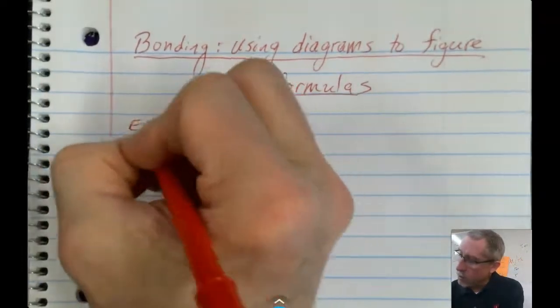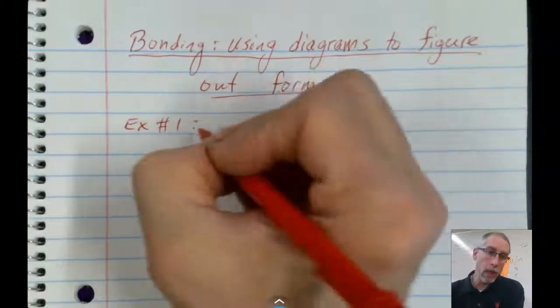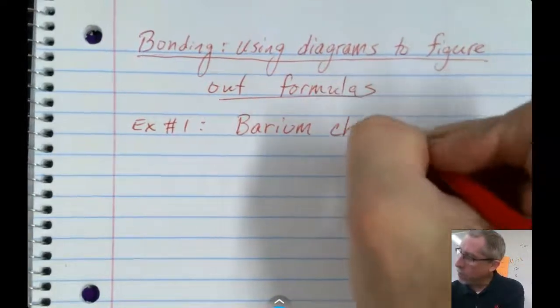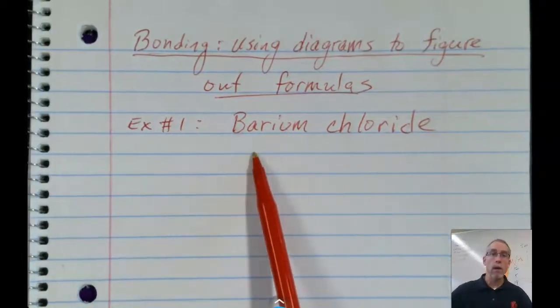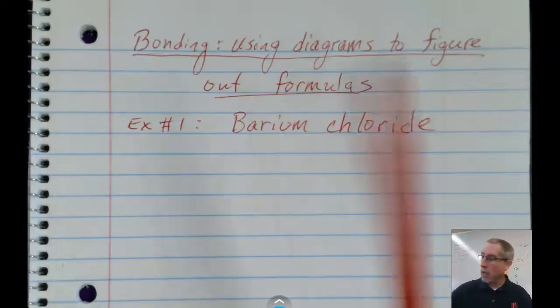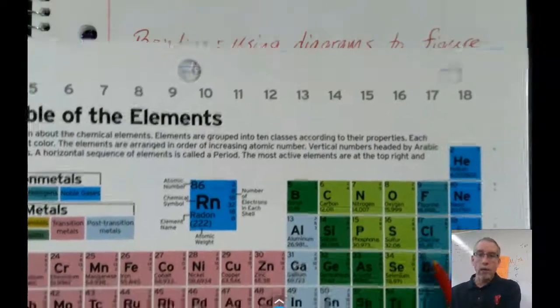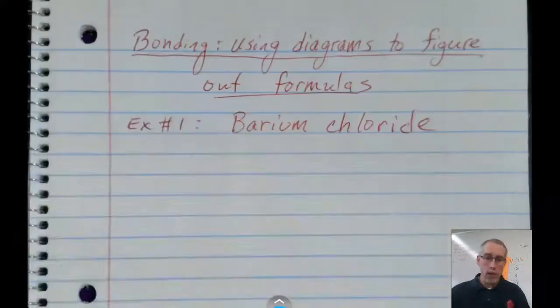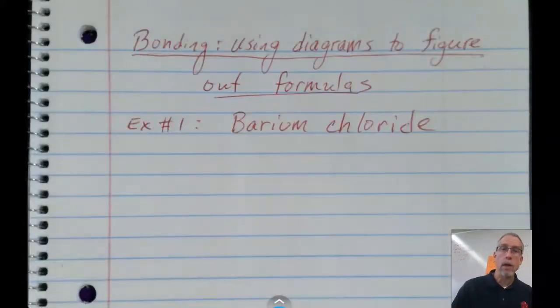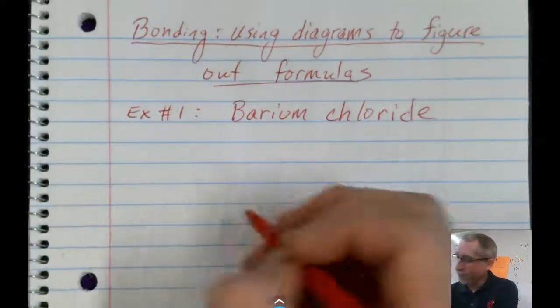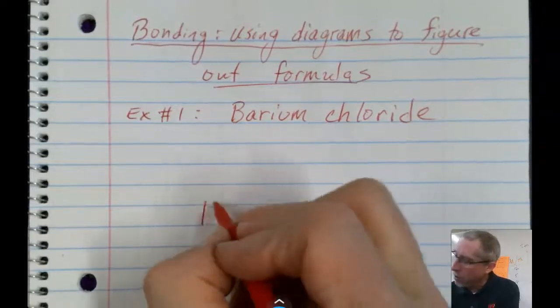Let's use an example here. Example number one will be barium chloride. When we write the name like that, we're identifying what the metal element is. It's barium number 56 on the periodic table. And we won't find chloride on the periodic table, because remember with the non-metals, we change the ending to IDE. So it's actually chlorine, but you'll be able to tell what the non-metal is because it's a very similar name. So the strategy here involves drawing little Lewis dot diagrams for each of these ions. Have yourself plenty of space.